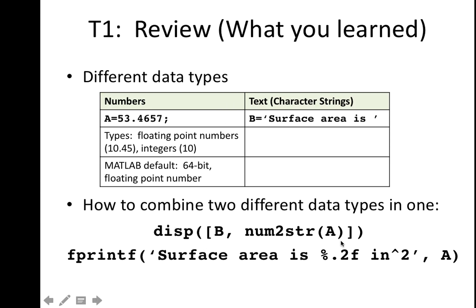So the reason it's important to understand the two different data types is because we often need to combine them in disp statements or titles. And so we learned these two syntaxes. One is disp. So disp requires parentheses because it is a function, and all functions require parentheses to insert something into them. B is the string here, surface area is, and I'm concatenating that with A because I want it to say surface area is 53.4657.